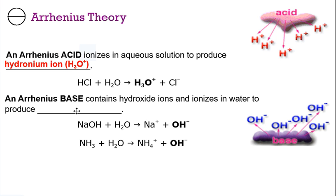An Arrhenius base, according to his theory, contains hydroxide ions and ionizes in water to produce hydroxides. So the key idea here is that you produce hydroxide ion in solution. Sodium hydroxide ionizes to form sodium and hydroxide ions completely. Ammonia ionizes to a small degree to form ammonium ion and hydroxide ion.